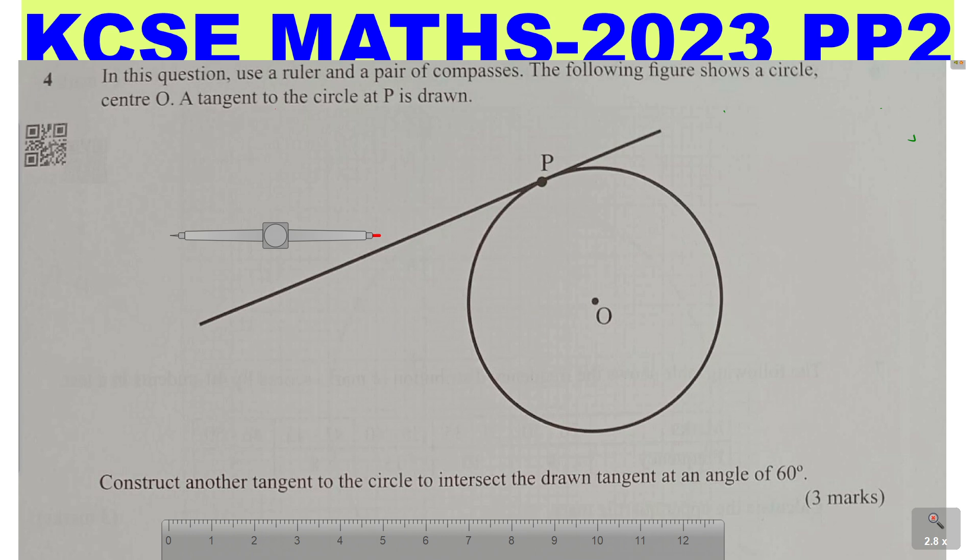So we'll begin by joining point P to center O like that. And then at O, need to construct 60 degrees. So stand with your pair of compass at O. Then this is how we construct 60 degrees at that point. So open any radius. So we'll mark an arc.